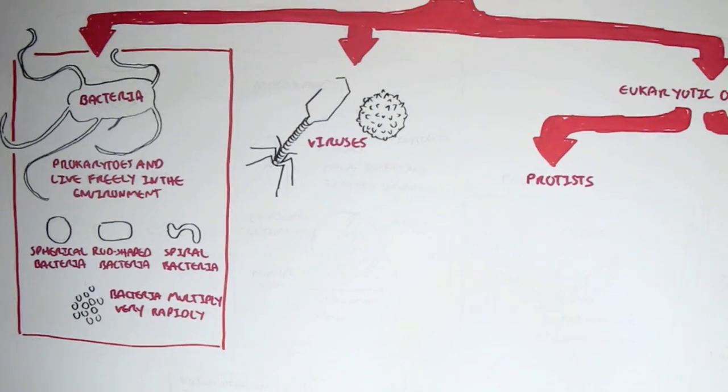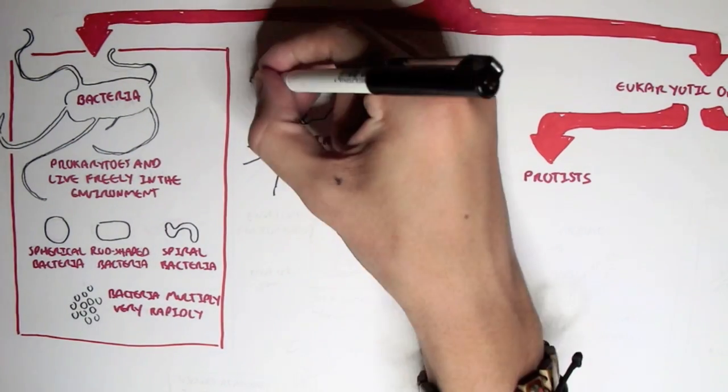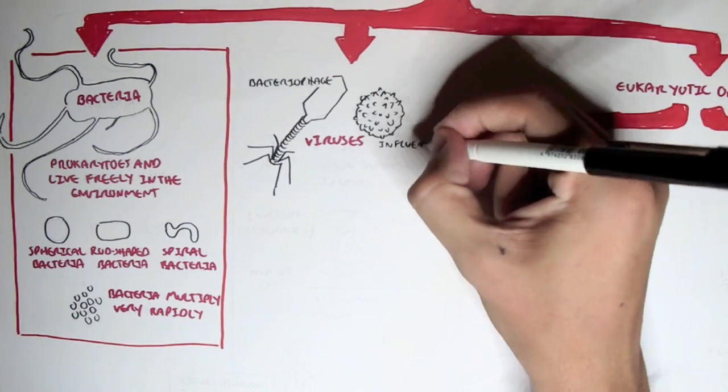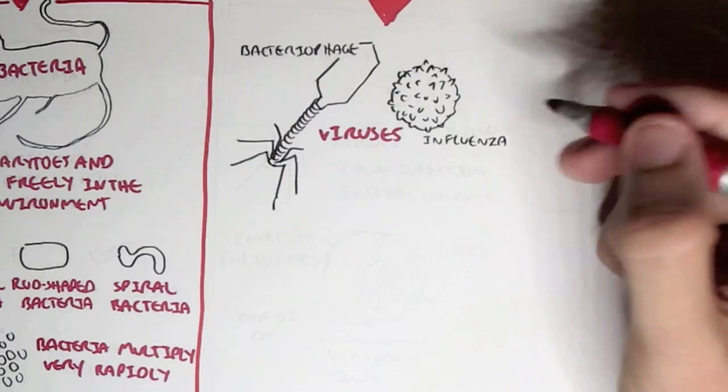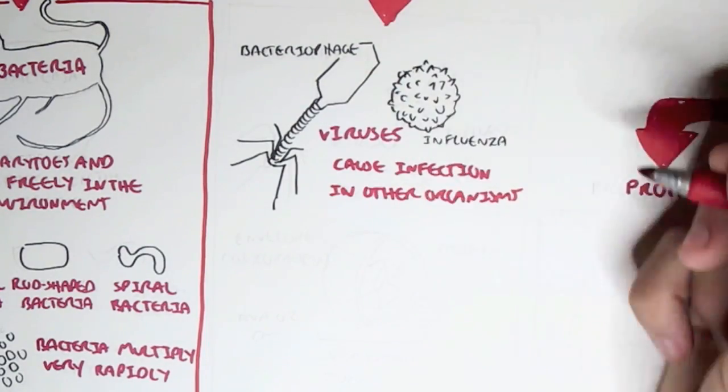Now the next type of microorganism is the virus. And these include viruses such as a bacteriophage, which infects particularly a bacteria, and also an influenza virus, which is very common in humans.